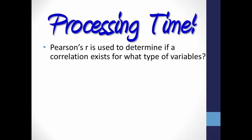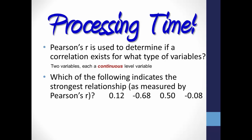Processing time. Pearson's r is used to determine if a correlation exists for what type of variables? It is looking for a relationship between two continuous-level variables, such as time spent on a treadmill and calories burned. Which of the following indicates the strongest relationship as measured by Pearson's r: 0.12, negative 0.68, 0.50, or negative 0.08? Remember that Pearson's r ranges from negative 1.0, a perfect negative correlation, to positive 1.0, a perfect positive correlation. The closer the statistic is to 1 — negative or positive — the stronger the correlation. Of these, negative 0.68 represents the strongest correlation, and negative 0.08 represents the weakest.